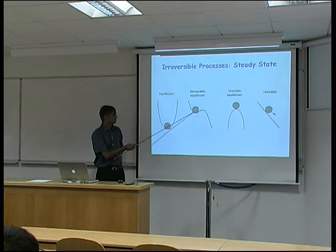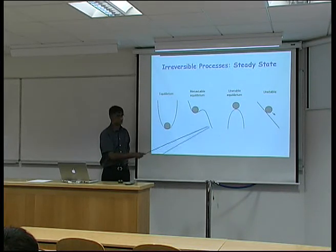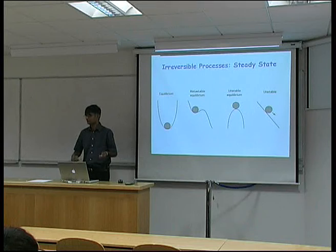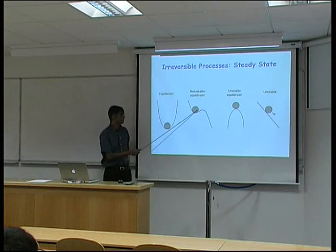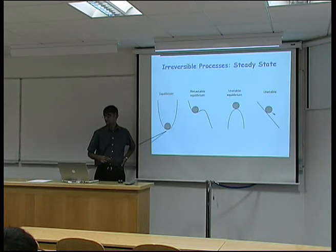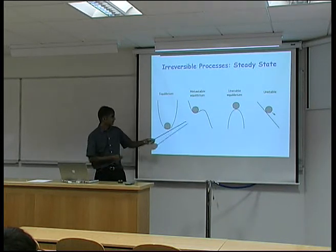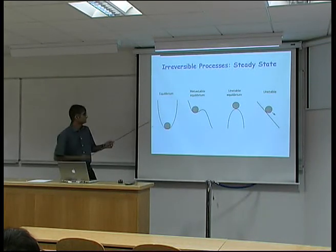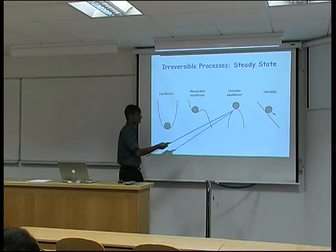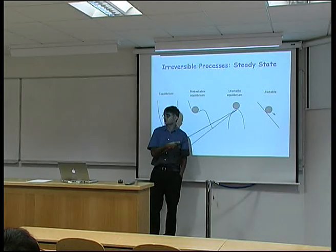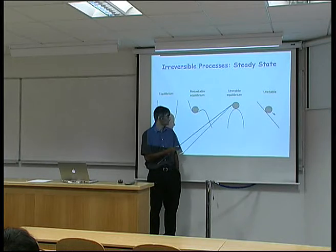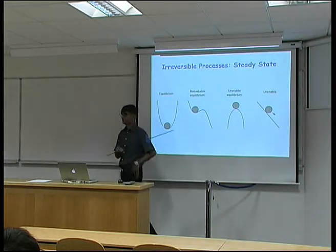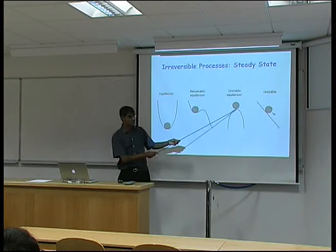This is metastable equilibrium, where we haven't reached the global minimum. The theory for metastable equilibrium is exactly the same as for stable equilibrium, so there is no real difference between them. Unstable equilibrium is different: if I give it a tiny, infinitesimal perturbation, it will tend to reduce its free energy. But if I don't disturb it, it will remain at that point.